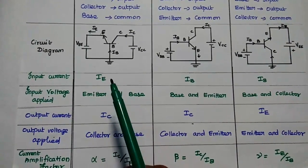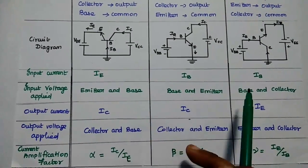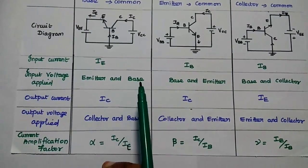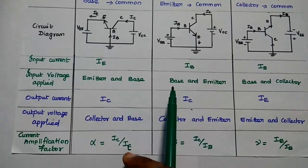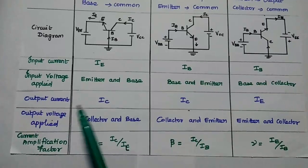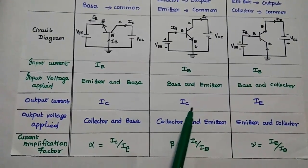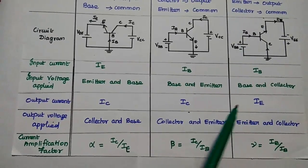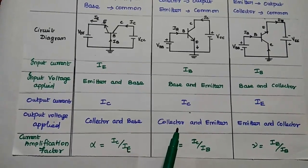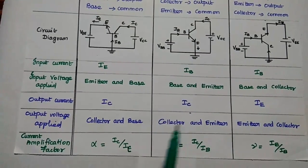To summarize the currents and voltages: for common base, input current is emitter current and input voltage is applied between emitter and base; output current is collector current and output voltage is between collector and base. For common emitter, input current is base current, input voltage is between base and emitter, output current is collector current, and output voltage is between collector and emitter. For common collector, input current is base current, input voltage is between base and collector, output current is emitter current, and output voltage is between emitter and collector.